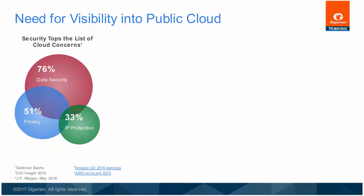However, the issue of security tops the list of cloud concerns. This is largely due to the fact that tools available in recent years do not provide complete visibility in the cloud. When you look at the top five public cloud threats, these are all familiar threats in an enterprise environment. Gigamon already provides visibility into these threats on enterprise premises in order to prevent them from happening there, and these threats still exist when migrating the infrastructure to the public cloud.